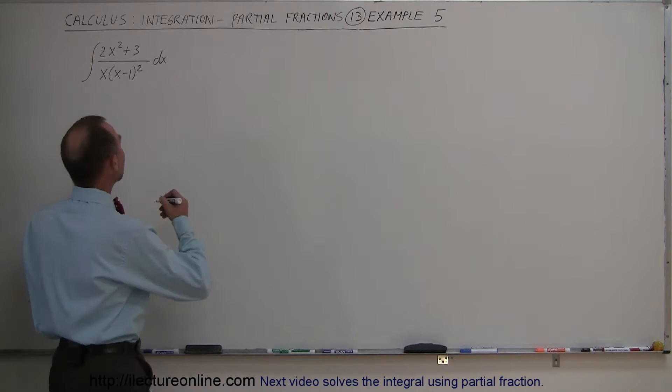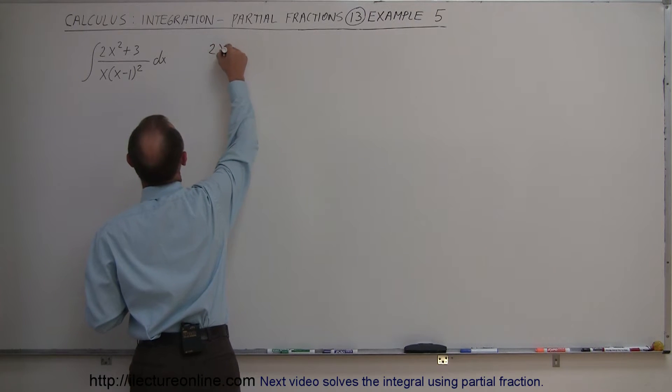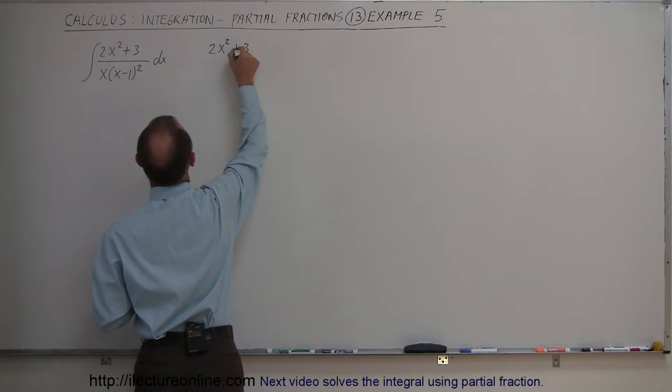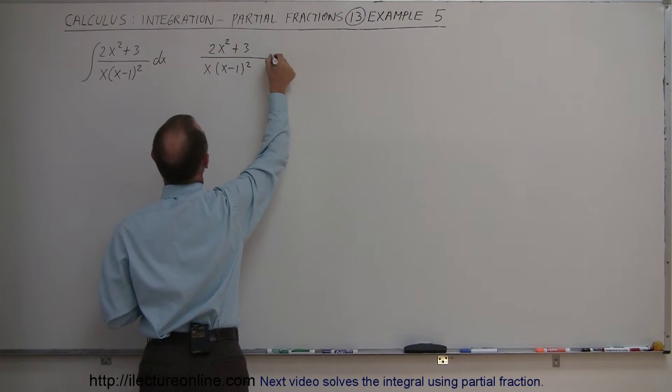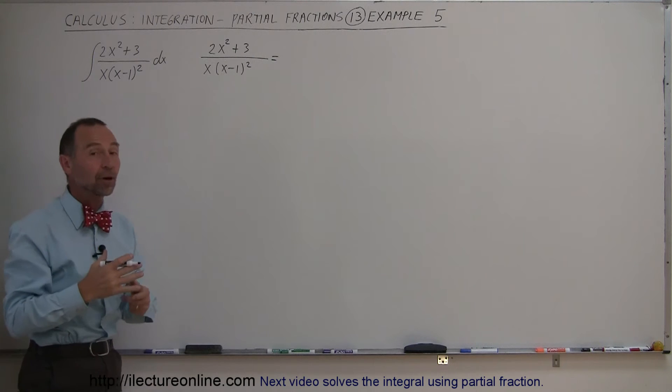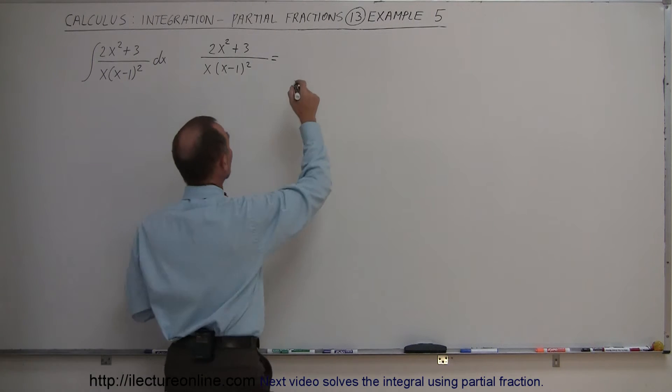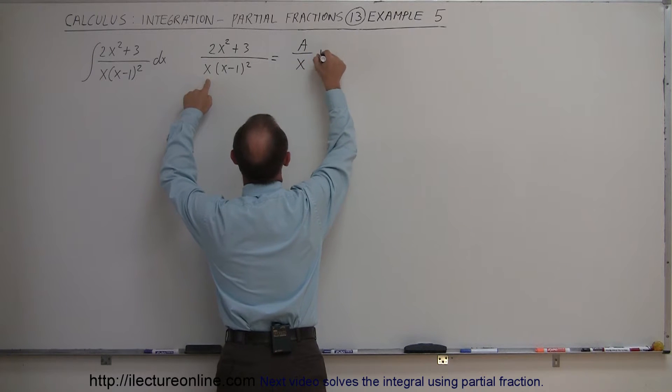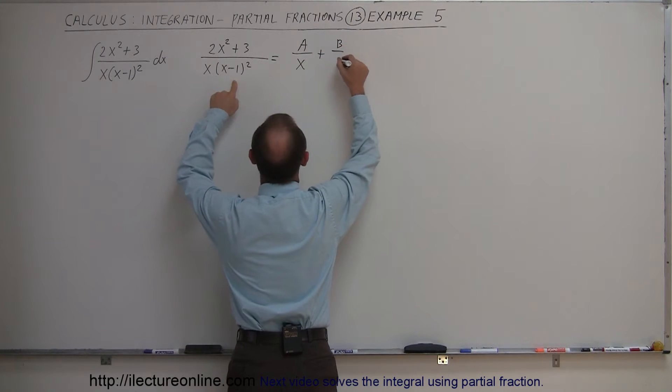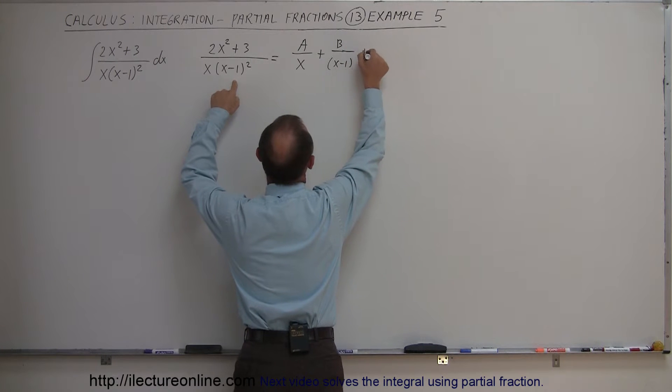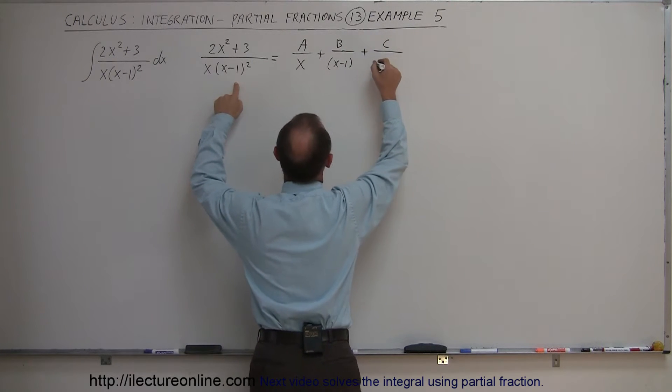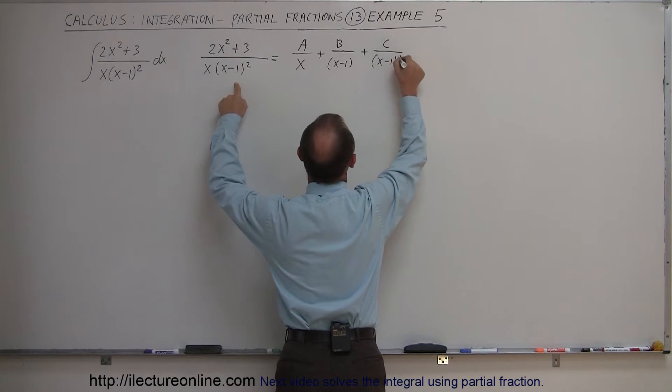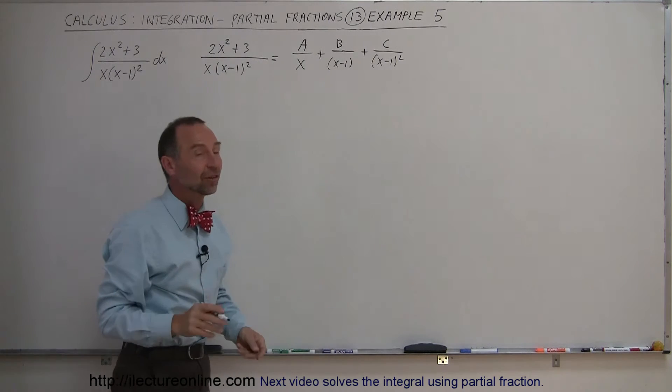So we can take the integrand 2x squared plus 3 divided by x times x minus 1 quantity squared and write it as the sum of partial fractions. So this is done as follows. This is equal to A over the first factor x plus B over the second factor to the first power plus C over the second factor to the second power. So we have three fractions in this case.